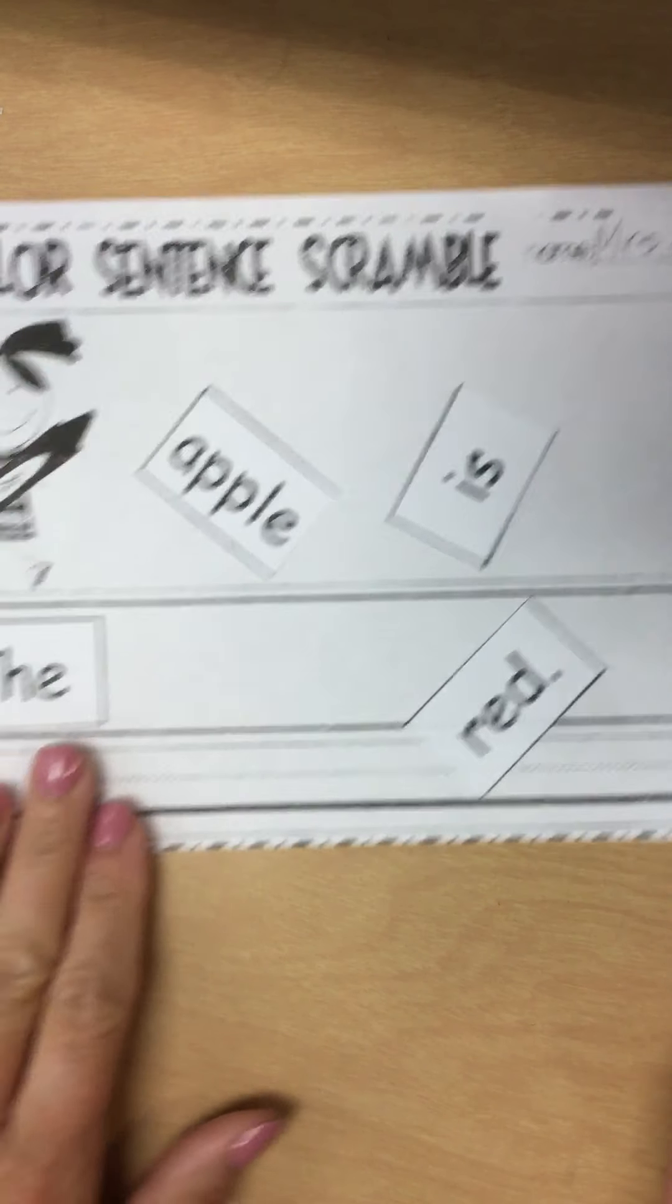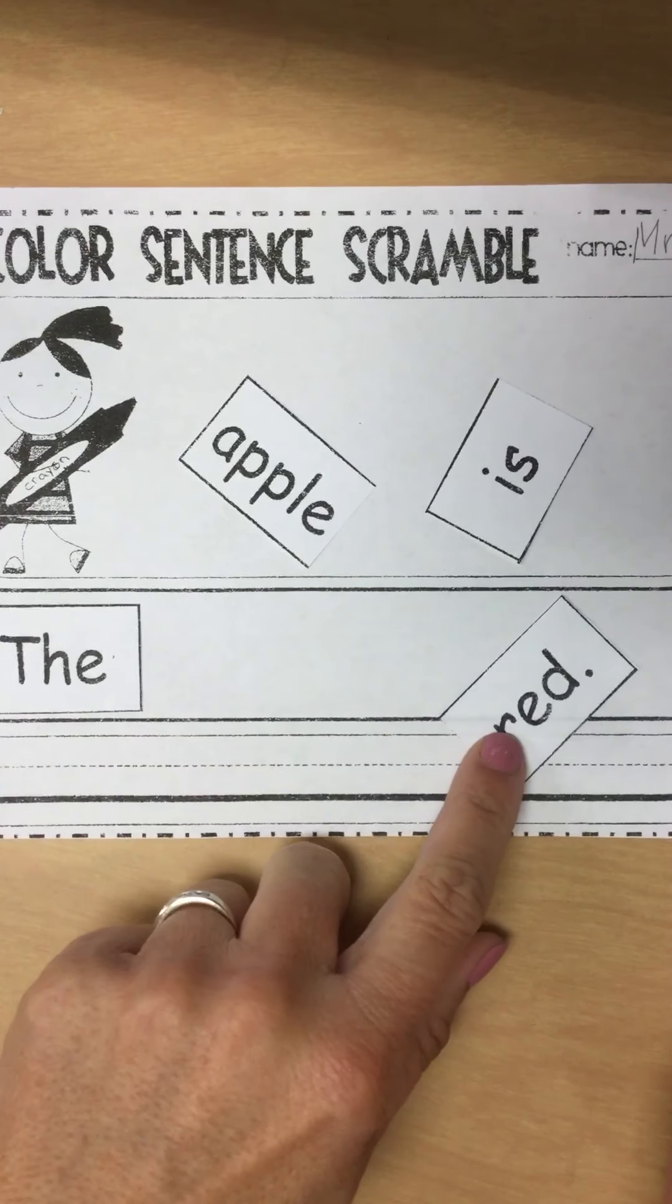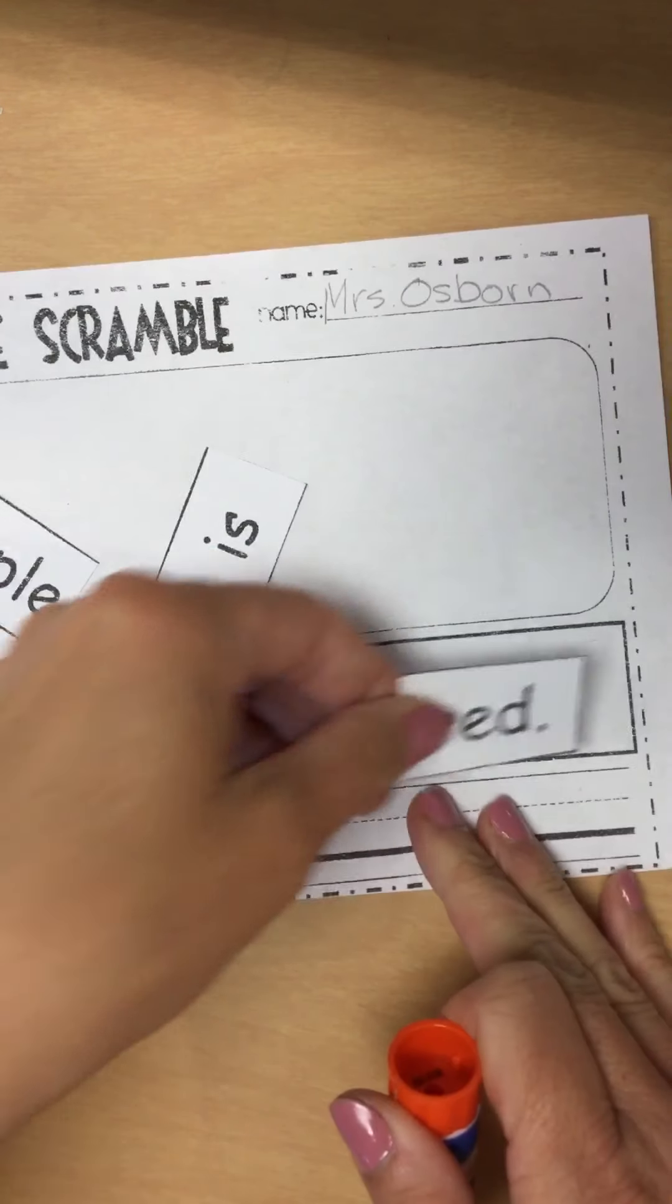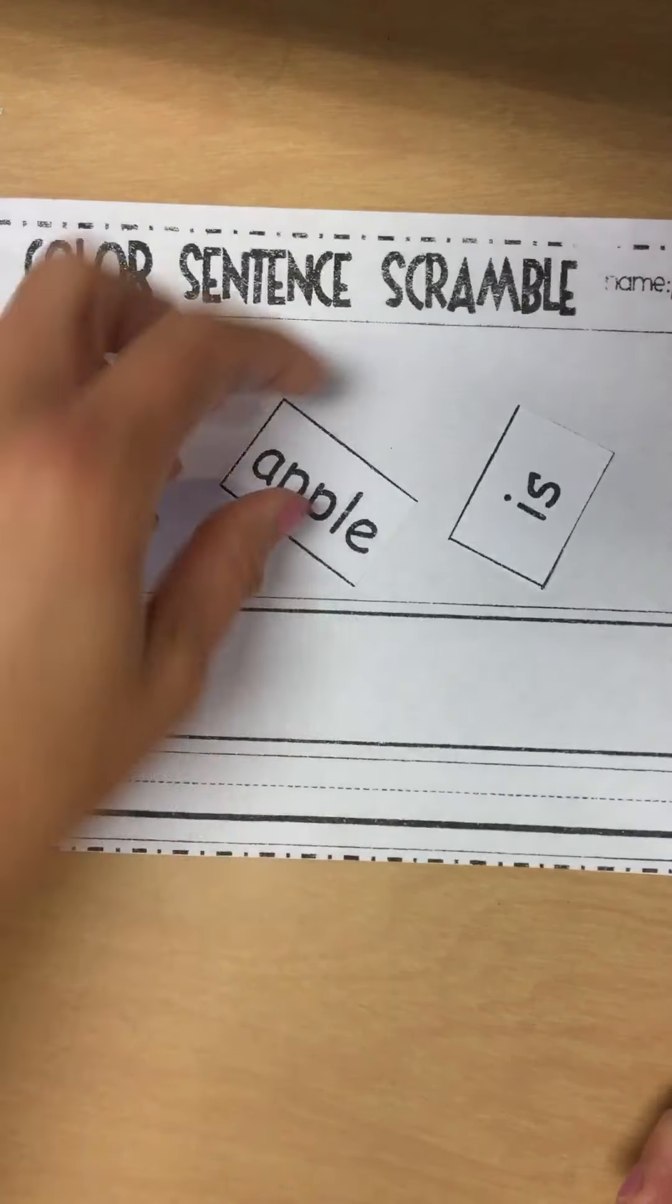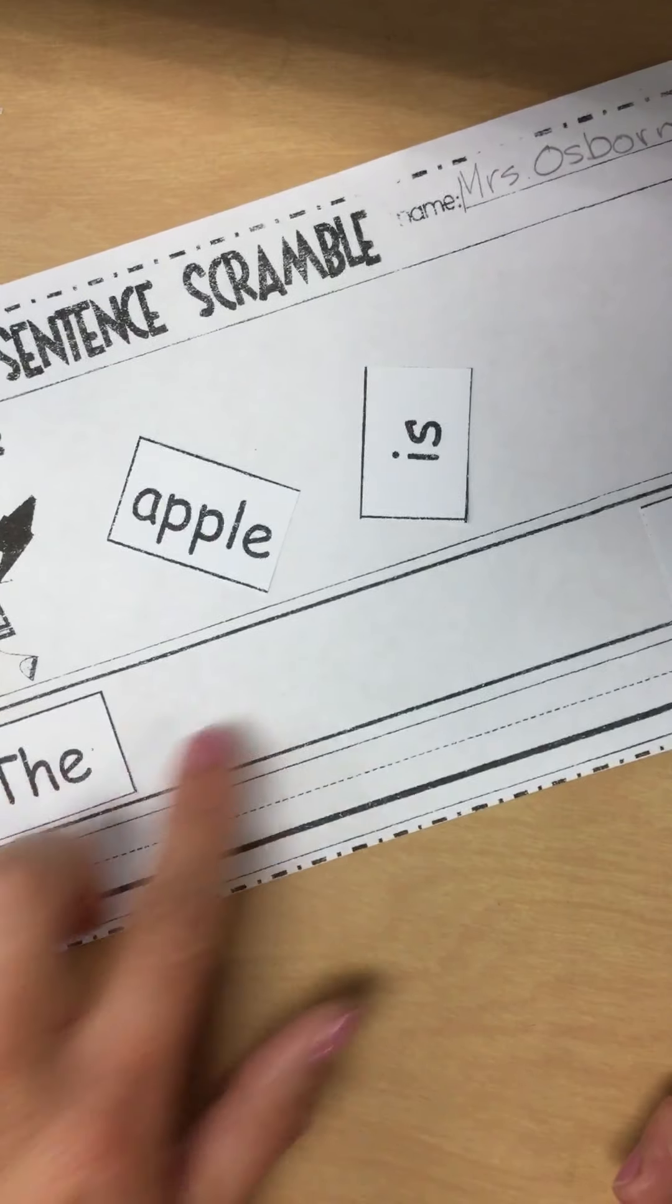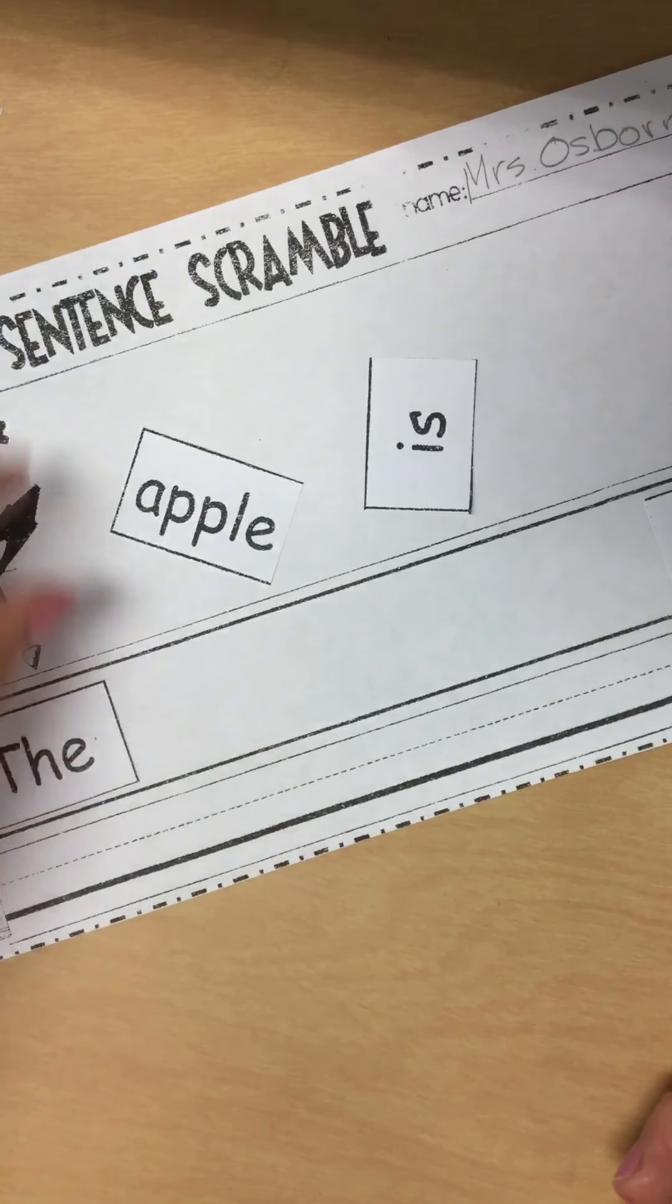Now what goes at the end of the sentence? A period. That's right. So there's my word with a period and I'm going to put that all the way at the end. So I have the words apple and the words is. So what do I need to put in between the is or the apple? That's right.